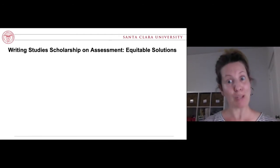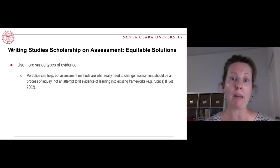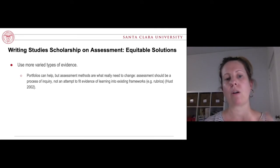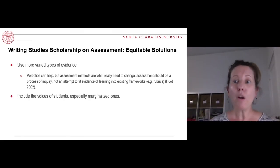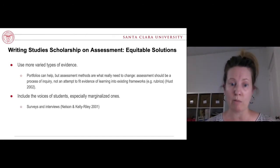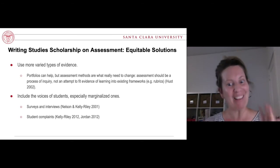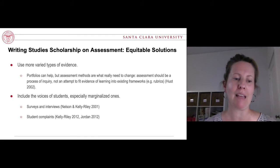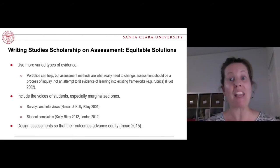Writing studies also has some solutions that might increase the equity of assessment. One is to use more varied types of evidence — one model of this is the portfolio model, common in writing studies, though some work has argued that assessment methods themselves have to change: assessment shouldn't be an attempt to fit evidence of learning into rubrics, but rather should be a kind of process of inquiry. Another way to make assessment more equitable is to include the voices of students, especially marginalized ones, through surveys and interviews, and to take student complaints seriously. Ultimately, we want to design assessments so that their outcomes advance equity and place equity at the center of how we do assessment.